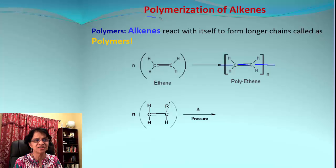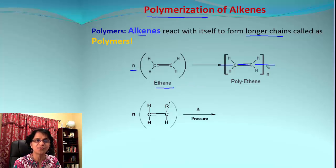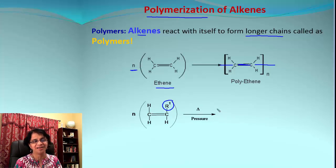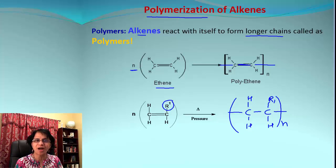The next process is polymerization of alkenes. In this, alkenes react with themselves and form longer chains. If we have many molecules of an alkene — for example n molecules — they react with each other to form a big long polymer, called poly(alkene). If there is a substituent R1 on the alkene, polymerization proceeds the same way, and the polymer will have that R1 group hanging off the carbon, repeated n times.